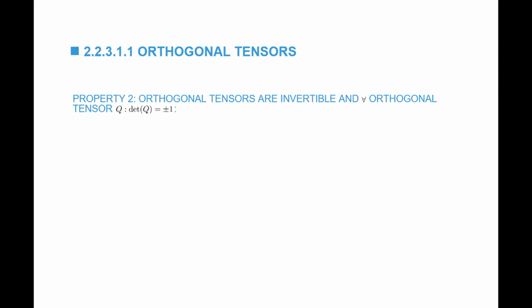Since Q transpose Q equals I, if I multiply both sides by Q inverse, I can see that Q Q inverse equals I, so Q transpose equals Q inverse. The inverse is simply the transpose of Q, and therefore orthogonal tensors are invertible.